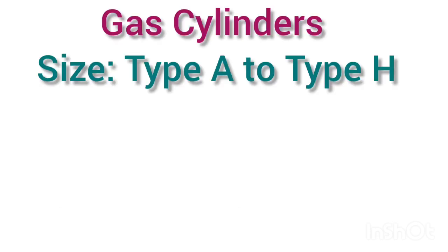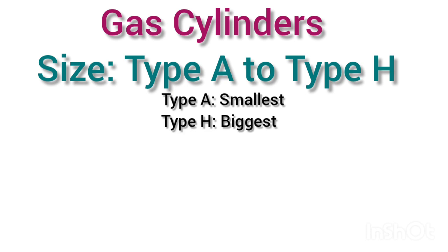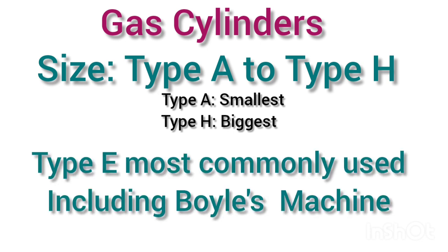The cylinders are named type A through H, H being the largest cylinder and type A being the smallest. Here in Boyle's machine, type E is used.